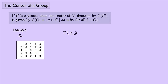By the way, the notation for the center — Z of G — is not unique. I've seen some people call the center C instead. But let's try and find the center of Z4. It's clear that the identity element is going to commute with everything, so the identity is always going to be in the center. In this case, 0 is playing the role of our identity element, so we know for sure 0 is in there.